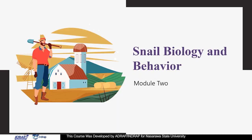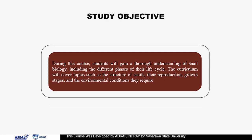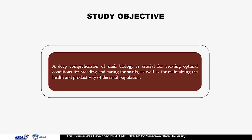Now let's look at snail biology and behavior, which brings us to module 2. The study objective of module 2 is that during this course, we expect to gain a thorough understanding of snail biology, including the different phases of their life cycle. This module covers topics such as the structure of snails, their reproduction, growth stages, and the environmental conditions they require. A deep comprehension of snail biology is crucial for creating optimal conditions for breeding and growing snails, as well as maintaining the health and productivity of the snail population.